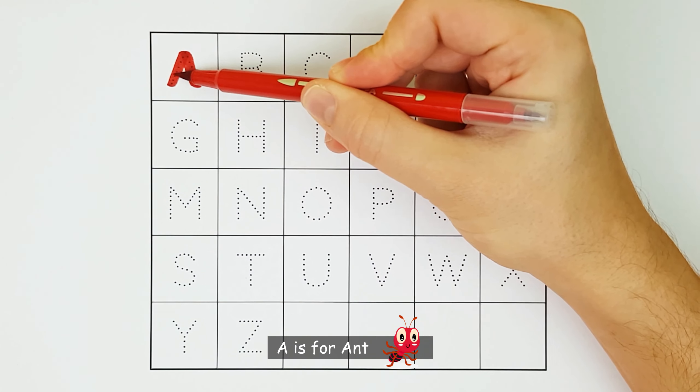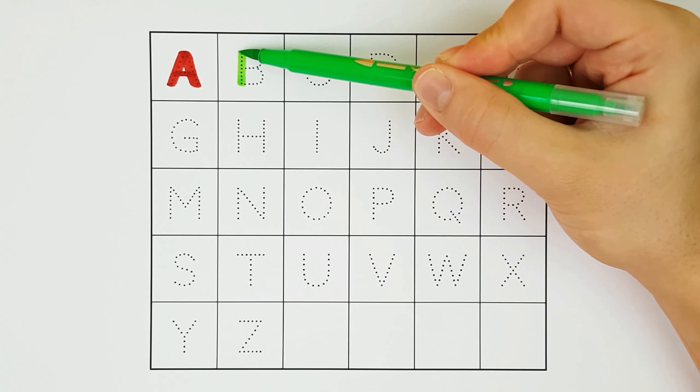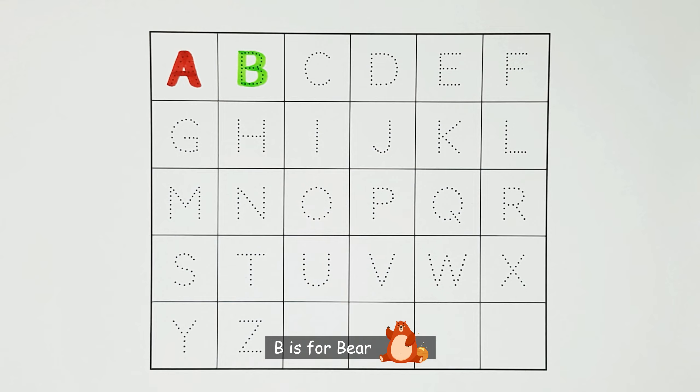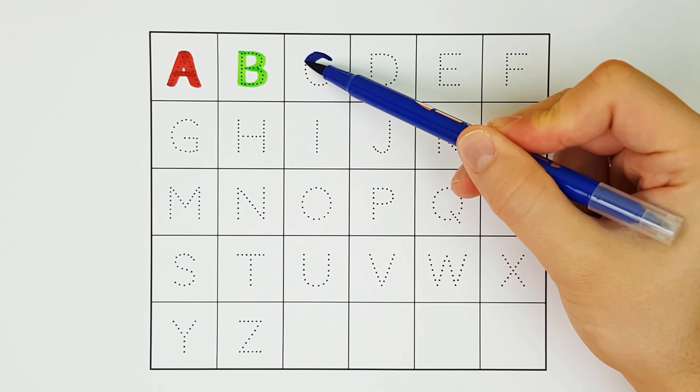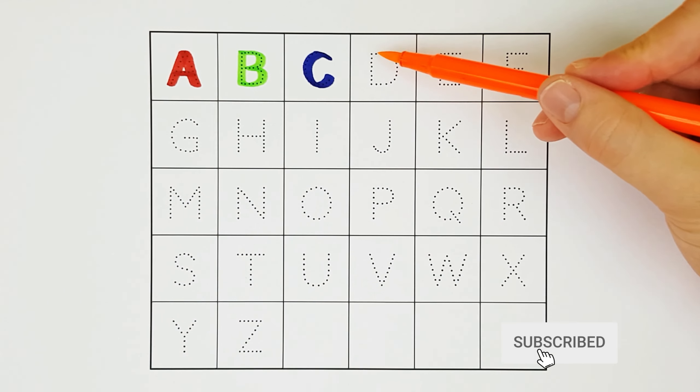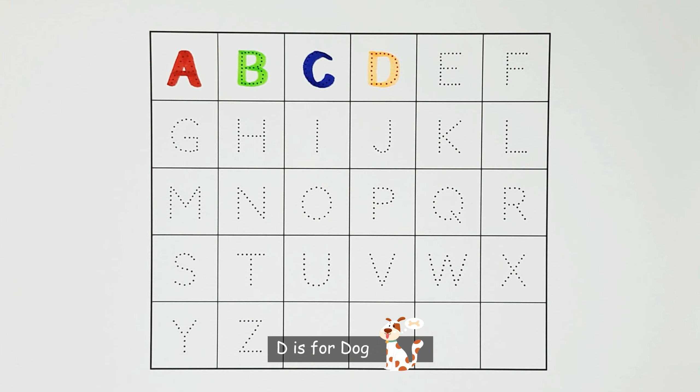A. A is for Ant. A. B. B is for Bear. B. C. C is for Cow. C. D. D is for Dog. D.